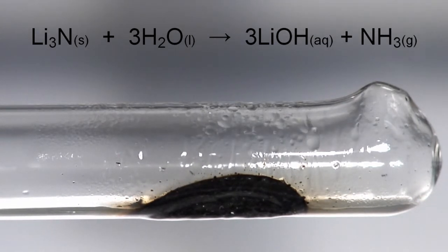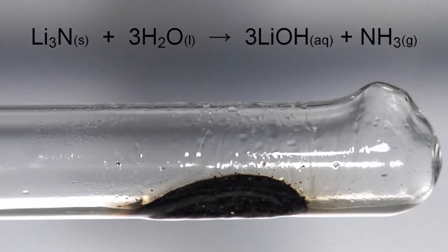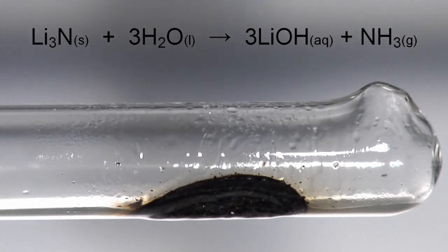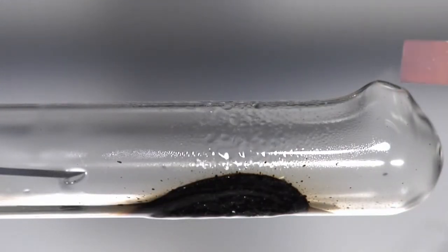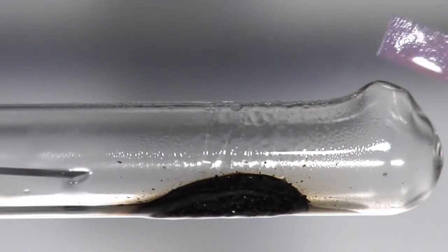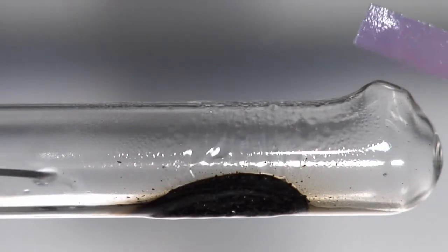The ammonia gas can be detected by holding moistened red litmus paper to the nozzle of the tube. The red litmus paper turns blue as the ammonia dissolves in the water on its surface.